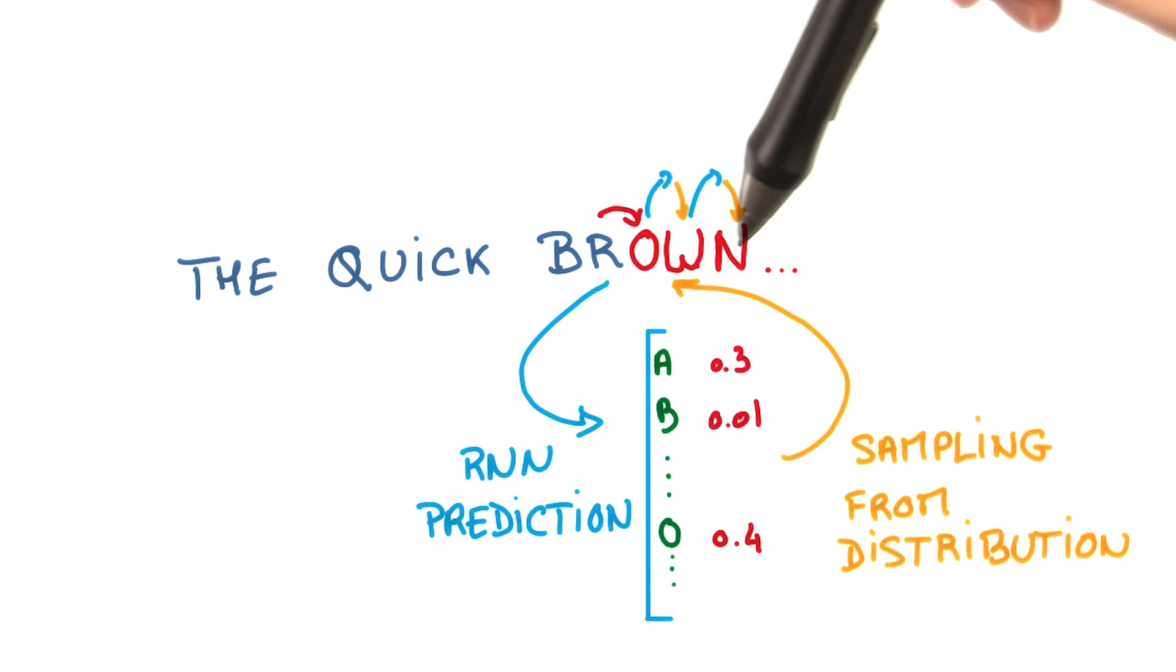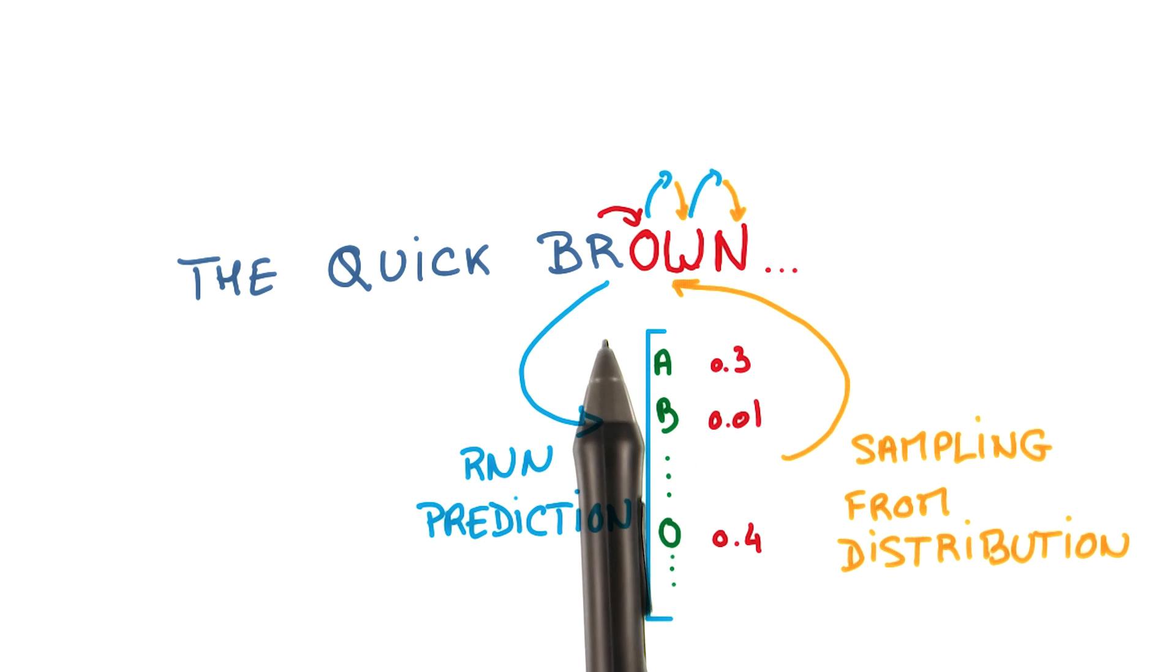predict, sample, predict, sample, and you can generate a pretty good sequence of whatever your RNN models. There's a more sophisticated way to do this that gives better results, because just sampling the next prediction every time is very greedy.